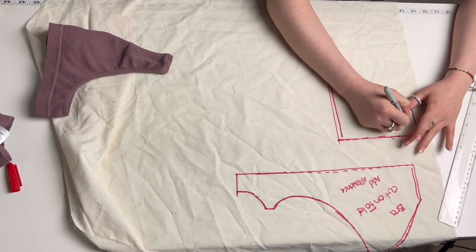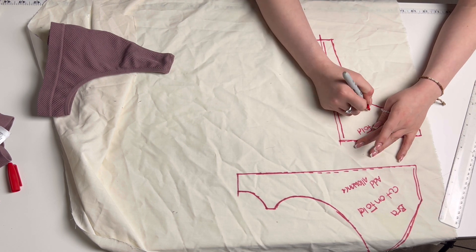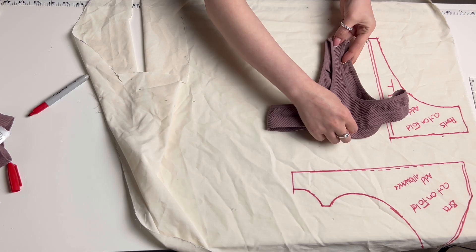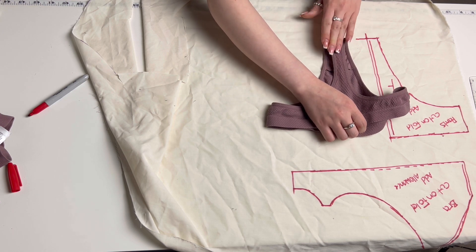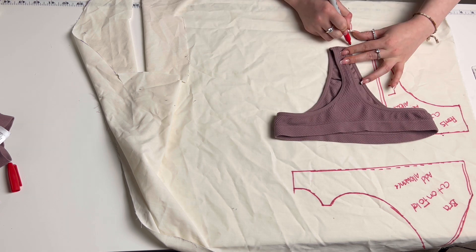Making sure to add your fold line and whether it's the front or the back. Now take the back of your pants and follow the exact same steps, making sure it's flat on your fabric before tracing.